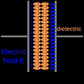Commercially manufactured capacitors typically use a solid dielectric material with high permittivity as the intervening medium between the stored positive and negative charges. This material is often referred to in technical contexts as the capacitor dielectric. The most obvious advantage to using such a dielectric material is that it prevents the conducting plates, on which the charges are stored, from coming into direct electrical contact. More significantly, however, a high permittivity allows a greater stored charge at a given voltage.